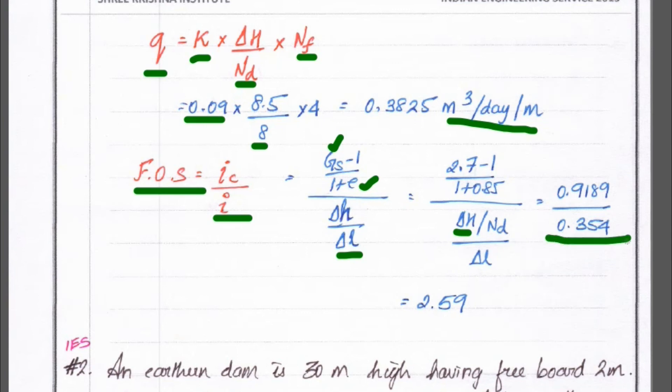So, we can solve this equation we get 2.59. So, the factor of safety is equal to 2.59 and seepage is equal to 0.3825 meter cube per day per meter. This is the method to solve the flow net problem.